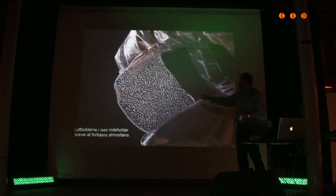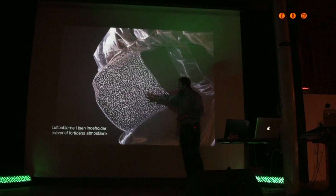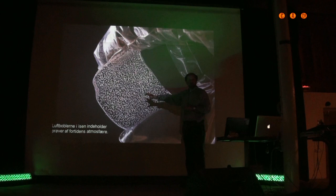This is how glacier ice looks. You see the two fingers holding a piece of ice, and you can see it's smack full of bubbles. It's almost impossible — actually, it is impossible — to make this ice artificially in a laboratory, because this is not frozen water.